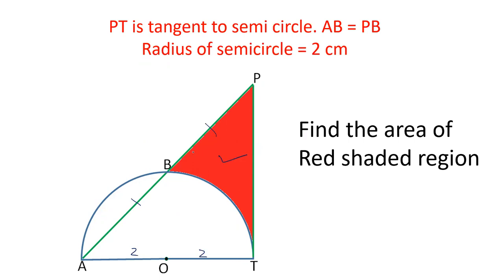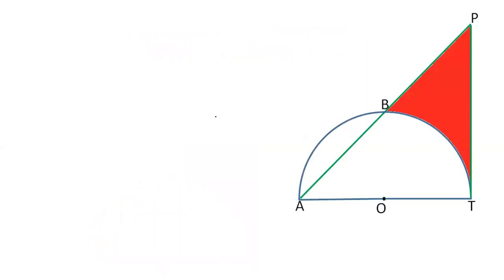Now, let's see how we can solve this question. Friends, first of all, we will join some lines. Join OB, draw perpendicular from B to PT. Let's say this point is Q.